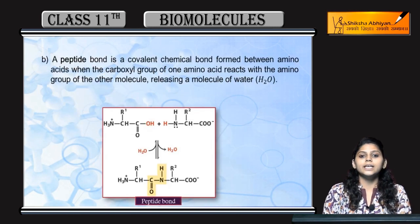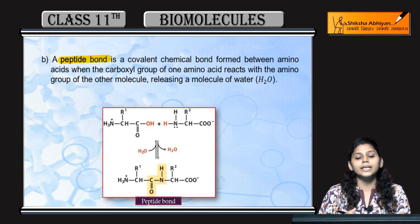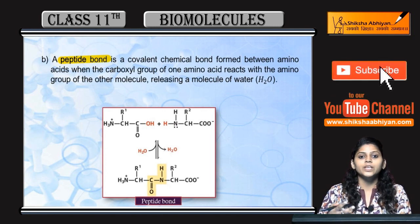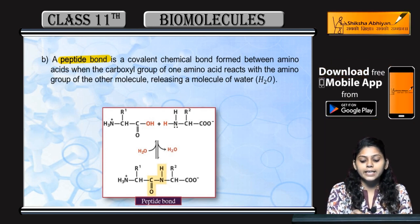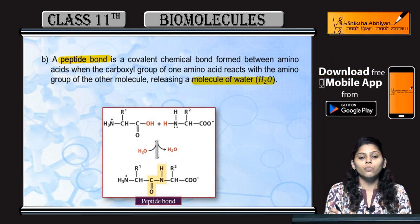Next one is peptide bond। Peptide bond बनता है दो amino acids के बीच में। दो amino acids bond बनाते हैं कैसे? With the removal of water।